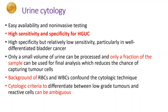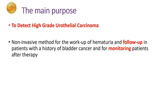Why do we do urine cytology? It is very easily available — you can take a random voided second urine specimen, it is a non-invasive method of testing. It has the highest sensitivity and specificity for HGUC — please keep this in mind: high sensitivity and specificity for high grade urothelial carcinoma. In well-differentiated bladder cancers and other causes it has relatively low sensitivity. Another issue is that we can examine only a small fraction of the urine sample, reducing the chance of capturing tumor cells. The background may confound or obscure the cytology, with RBCs, WBCs, etc., and criteria can be ambiguous.